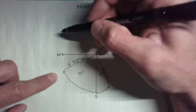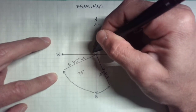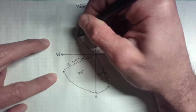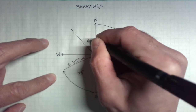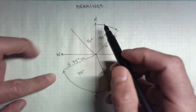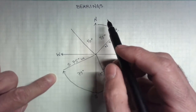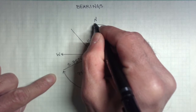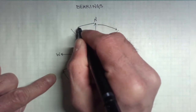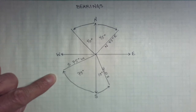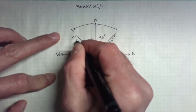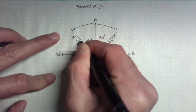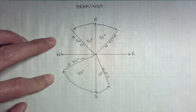And in the northwest quadrant, let's say this is a 40 degree angle. The bearing for the northwest quadrant is always from the north towards the west some number of degrees. So in this case, our bearing would be north 40 degrees west.